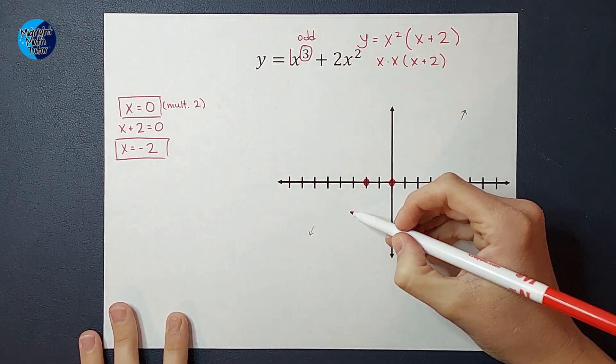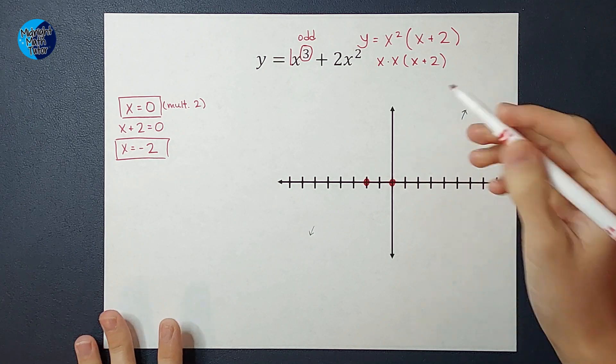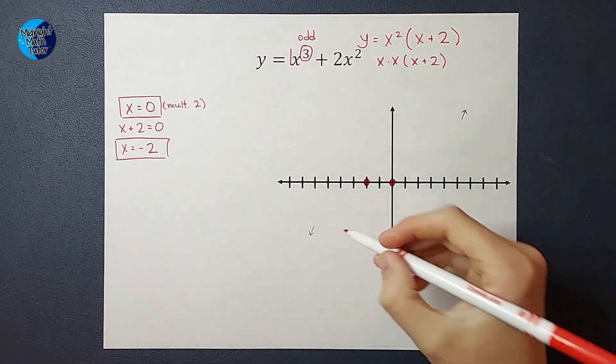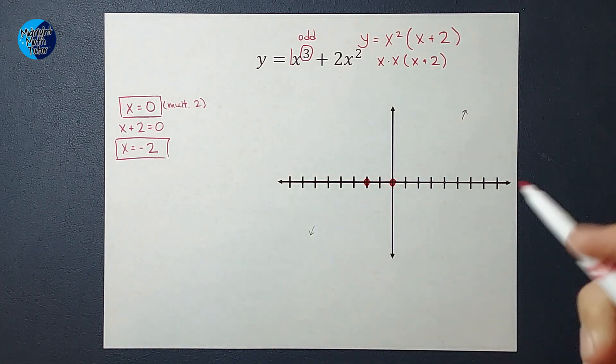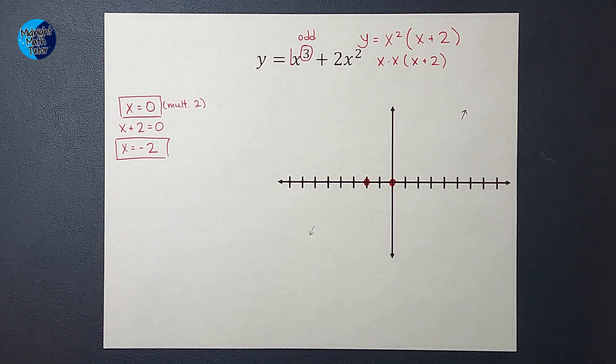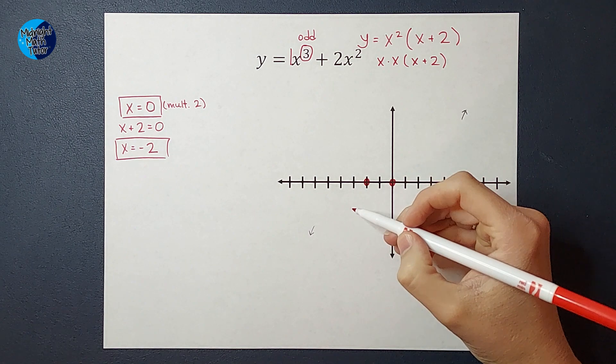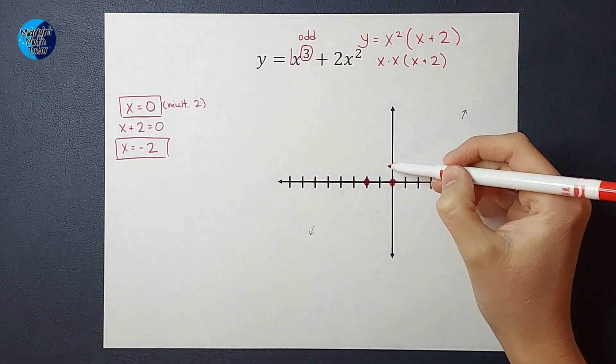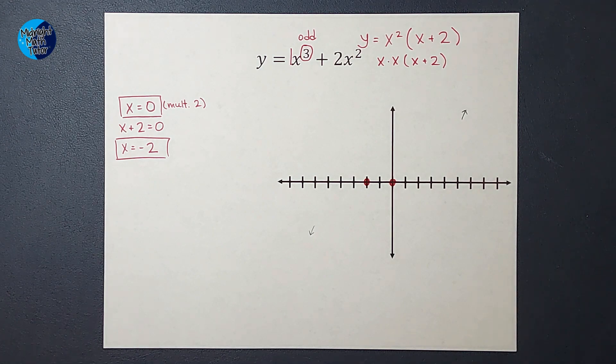Now on my x minus two, it just has a multiplicity of one. It has an odd multiplicity, so my graph is going to go through that point. So if you have an odd multiplicity, it's going to go through. The shape might differ a tiny bit, but your teacher probably doesn't mind you knowing that at this moment. So if you have an odd multiplicity, it's going to go straight through. If you have an even multiplicity, it's going to bounce.